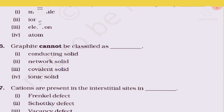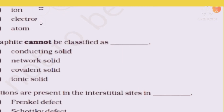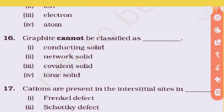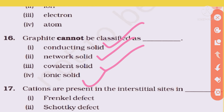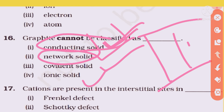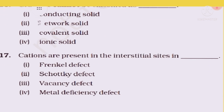Question 16: Graphite cannot be classified as which of the following — a conducting solid, network solid, covalent solid, or ionic solid? Graphite conducts electricity so it is a conducting solid. It has layered 3D network structure so it's a network solid. It involves sharing so it's a covalent solid. But it cannot be classified as an ionic solid. Option 4 is the right answer.